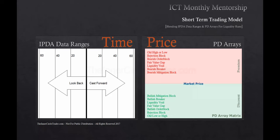That's the order in which the algorithm will seek those respective price reference points — this is the hierarchy in the way they're set up. There is not always a void or a gap or mitigation block; it may simply need to go all the way up to a bearish order block or a rejection block, and the same applies in the opposite direction when the market's in a discount.